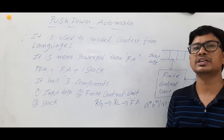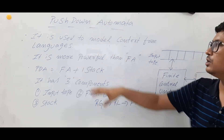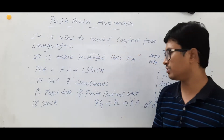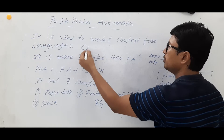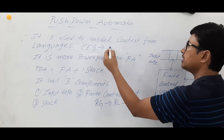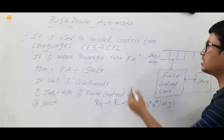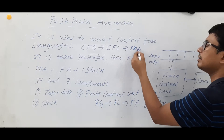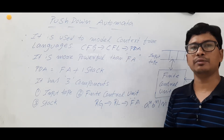So what is this language? This language belongs to context-free languages. Context-free languages can be modeled by using a pushdown automata. So pushdown automata is used to model context-free languages. We will have a context-free grammar — context-free grammar generates the context-free languages — and it can be modeled by using a pushdown automata.